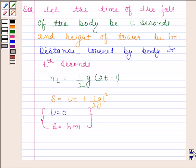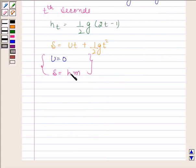By substituting 0 in place of u and h in place of s, we get h equals 1 by 2gt square. Let us name this equation as equation 1 and this as equation 2.